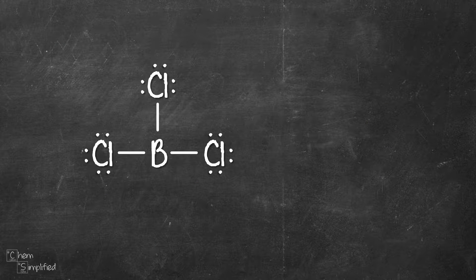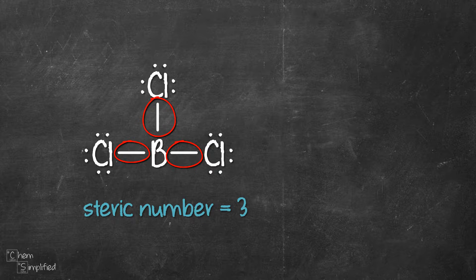Our next example is BCl3. Now boron is an exception to octet where it doesn't have to be octet to be happy—it's perfectly fine with 6 electrons. The central atom is boron and there are three groups connected to it, so the steric number for BCl3 is 3. Since there's no lone pair on boron, our number of lone pairs would be 0.